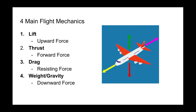Lift is the upward force, thrust is the forward force, drag is the resisting force, and weight and gravity are the downward force. I described drag as the resisting force because technically it doesn't pull the airplane backwards — it's just resisting the airplane from moving forward.